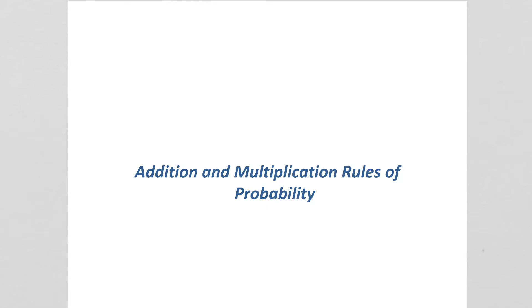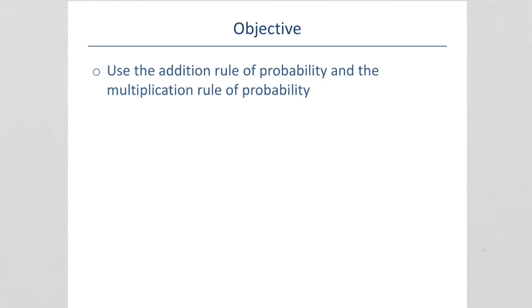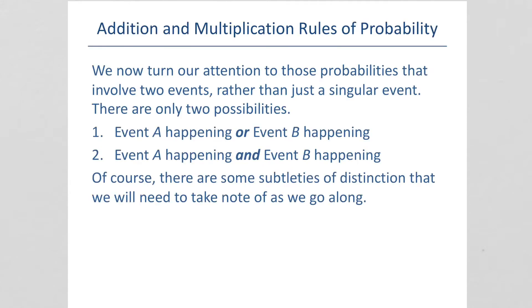Today we're going to talk about addition and multiplication rules of probability. We now turn our attention to those probabilities that involve two events, rather than just a singular event. There are only two possibilities — event A happening or event B happening, or event A happening and event B happening.